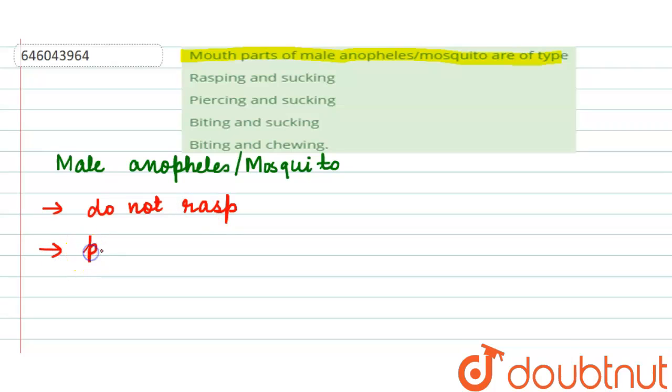Moving on further, we can now mention that they are the ones which are having piercing and sucking mouth. What happens is that they are the ones which can pierce and suck. This is why they are having a piercing and sucking mouth.